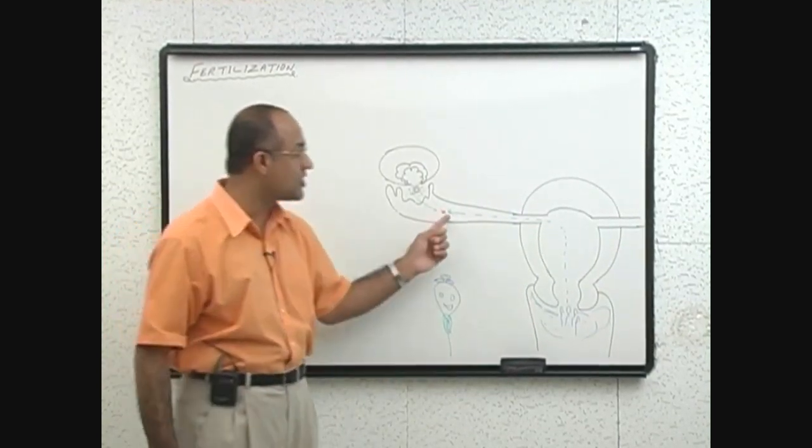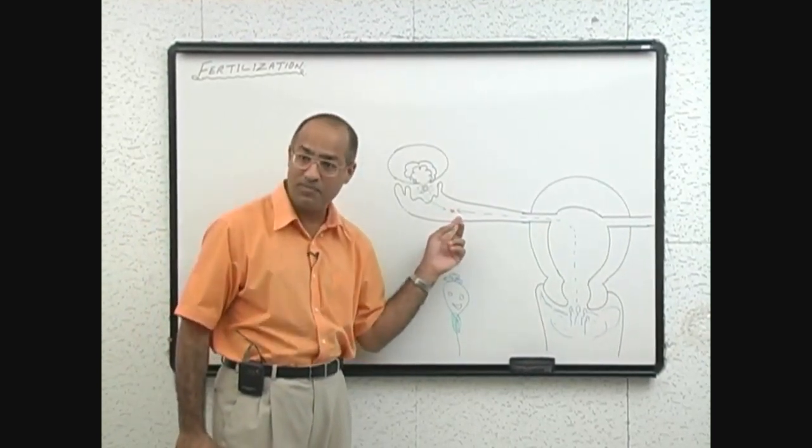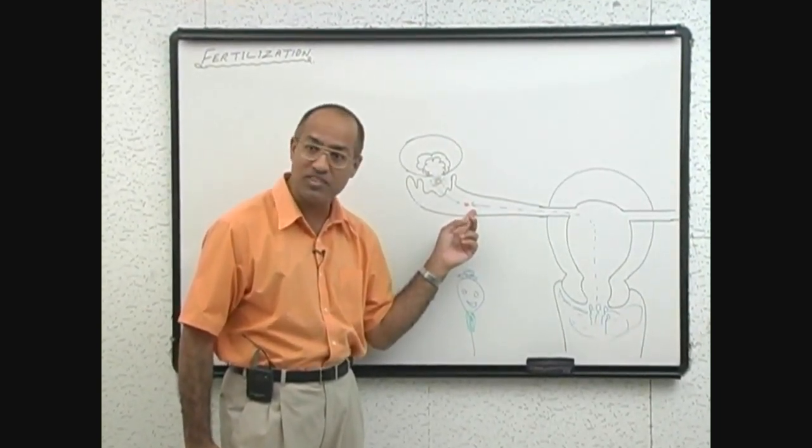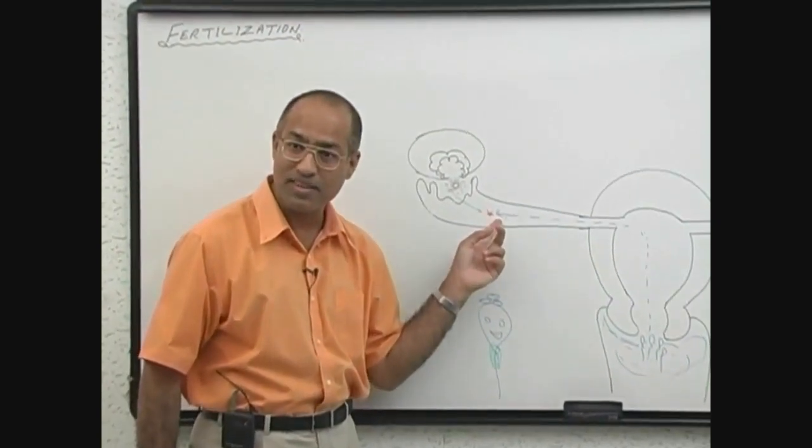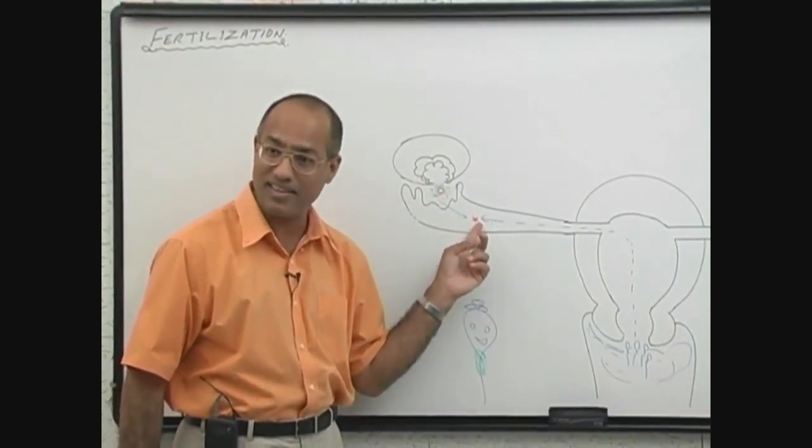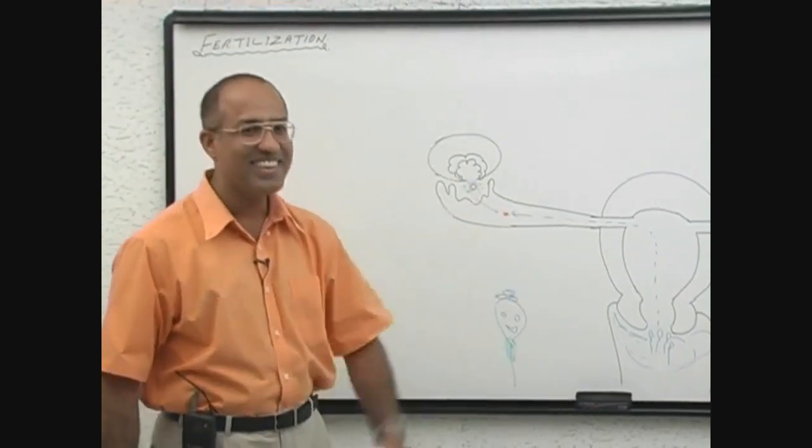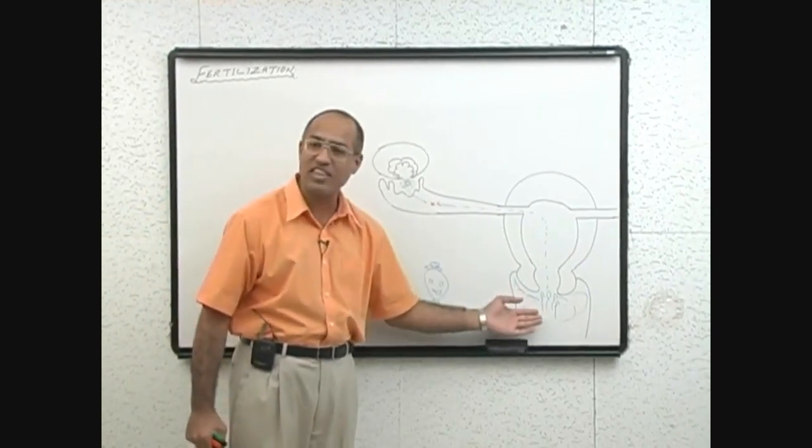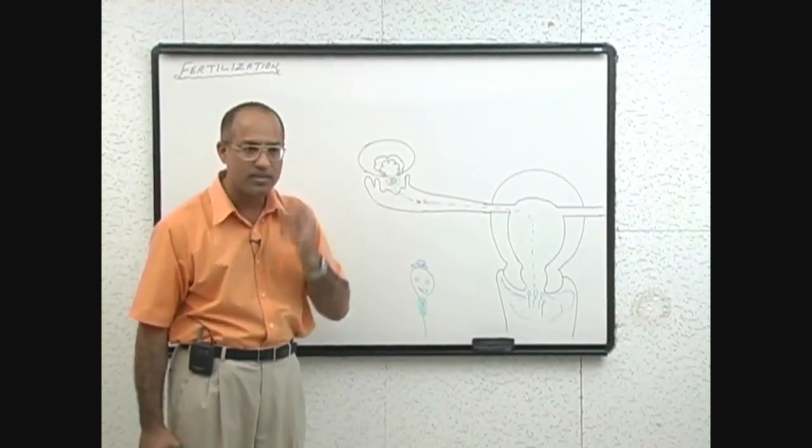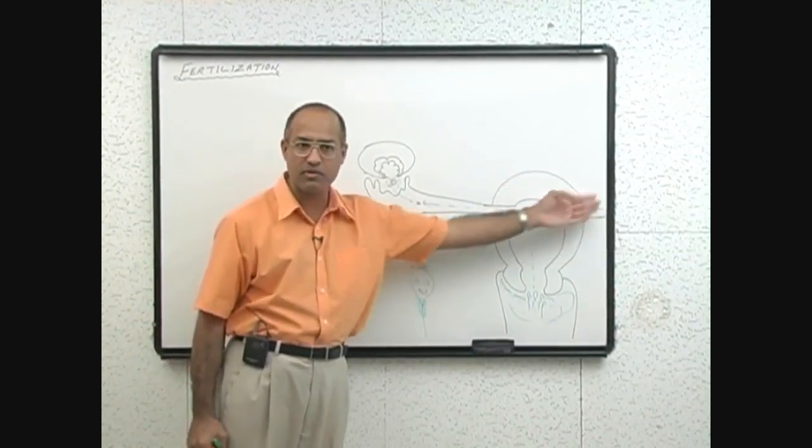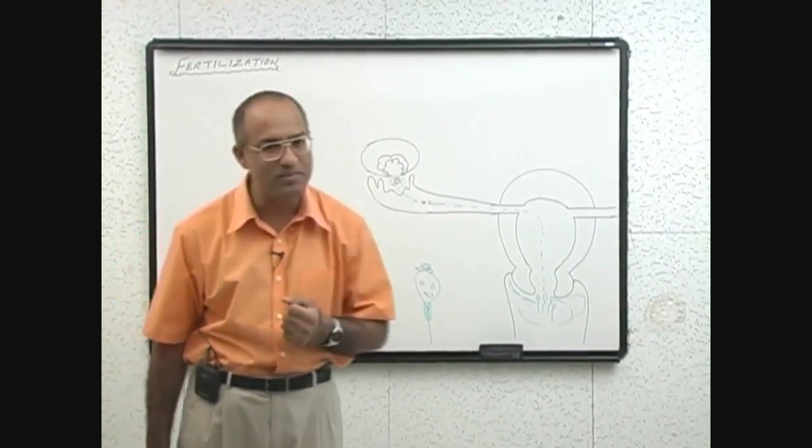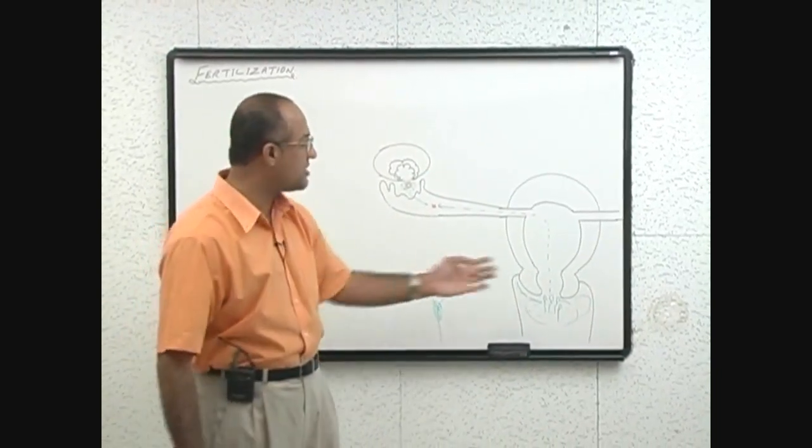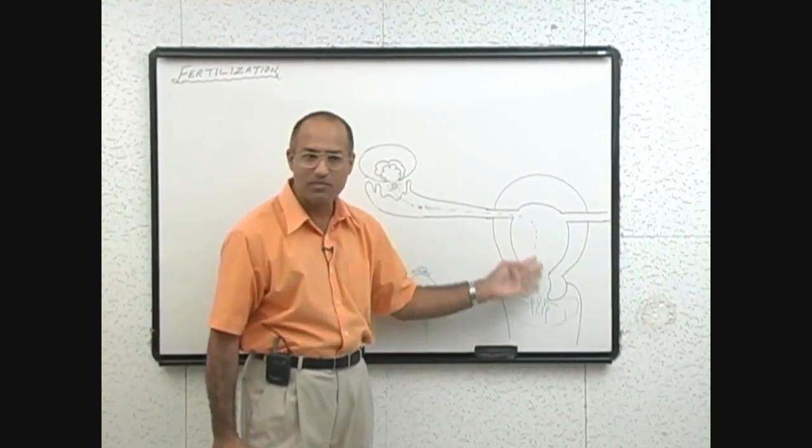It means any sperm which is reaching here is one in a million. You have heard the song, one in a million, you are one in a million. That could be said about the sperm also, that any sperm which reaches here, we can sing you are one in a million. So you have to remember, out of 500 millions or 200 million sperms deposited here, maybe just 200 reaches here. Where have the others gone? They disintegrate on the way, casualties on the way, many of them.